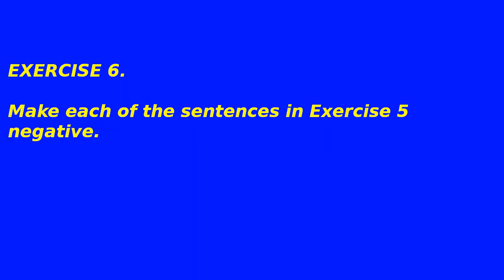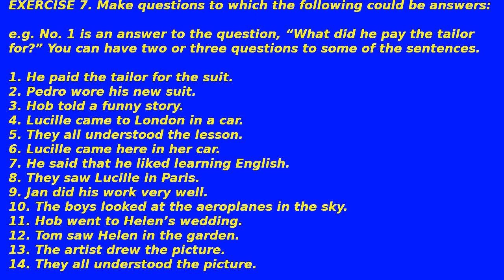Exercise 6: make each of the sentences in exercise 5 negative. Exercise 7: make questions to which the following could be answers. For example, number 1 is an answer to the question: 'What did he pay the tailor for?' You can have two or three questions for some of the sentences.